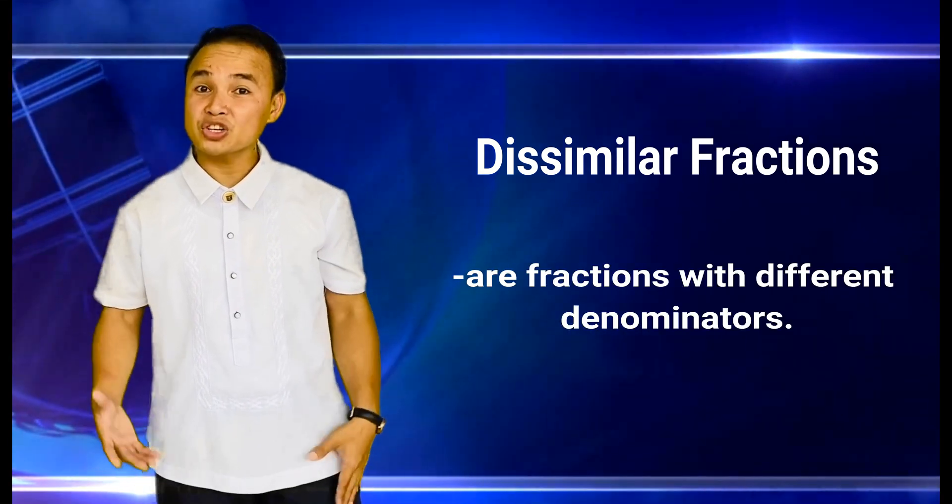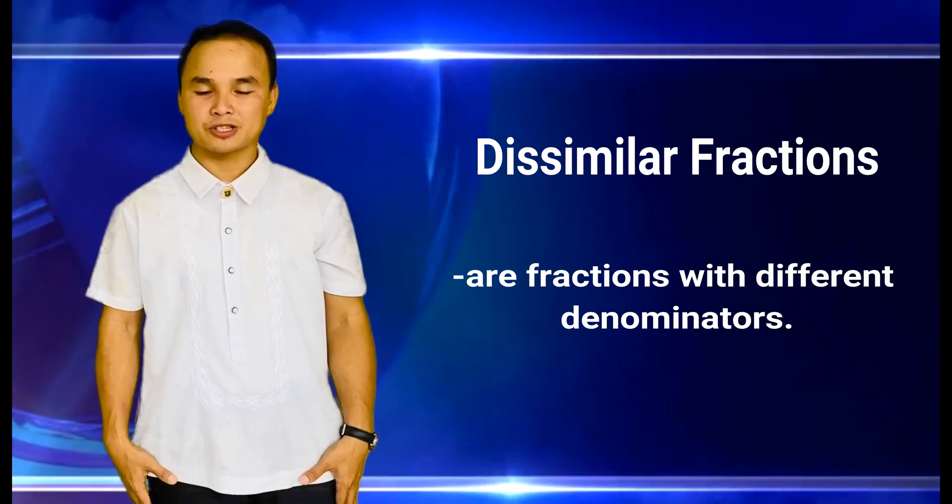Dissimilar fractions are fractions with different denominators. To add or subtract dissimilar fractions, we need to rewrite them as similar fractions. The sum will be represented by adding the numerator over the common denominator. While the difference is represented by subtracting the numerators over the common denominator. And then you need to simplify the sum or difference if needed.